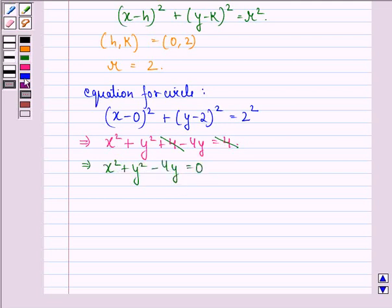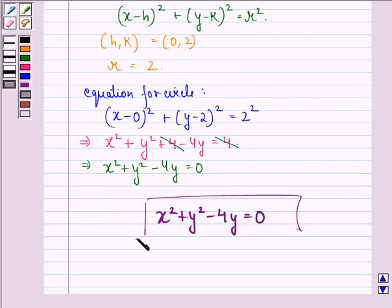So our answer to the question is that the required equation of the circle with center (0, 2) and radius 2 is x square plus y square minus 4y equal to 0. So this is our answer to the question.